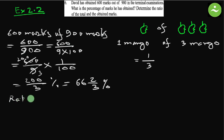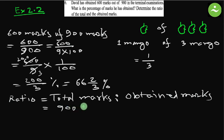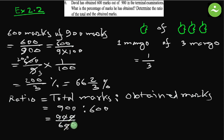Now determine the ratio of the total and the obtained marks. Ratio equals to total marks to obtained marks. Total marks is 900, obtained marks is 600. We can make it a fraction — 900 by 600. Simplify: divide both by 3, this will be 3 by 2. So the ratio equals to 3 is to 2.